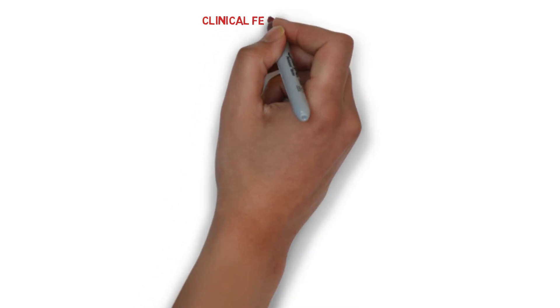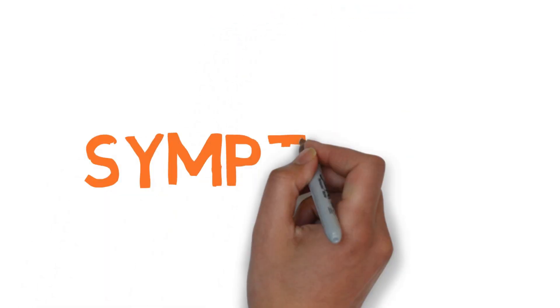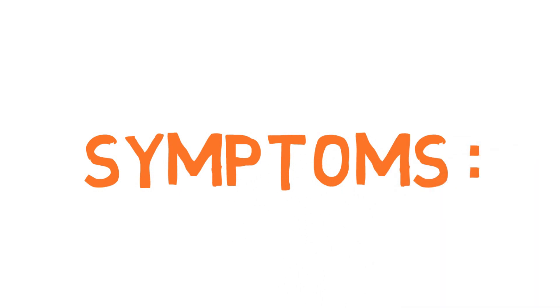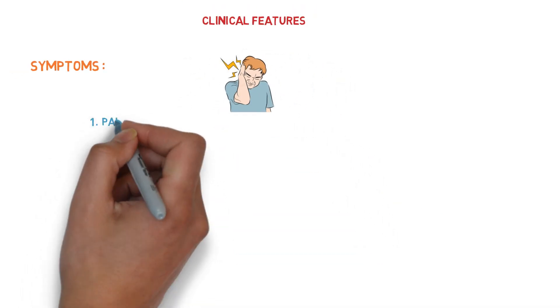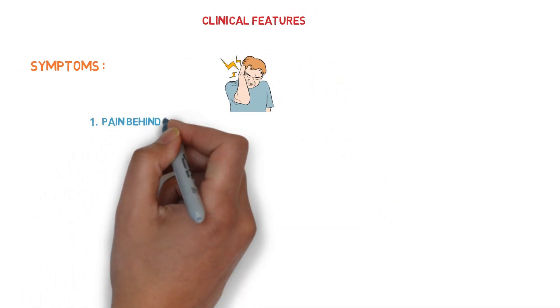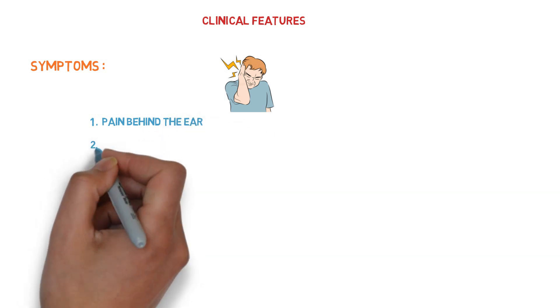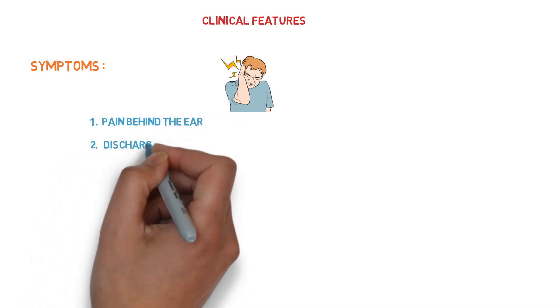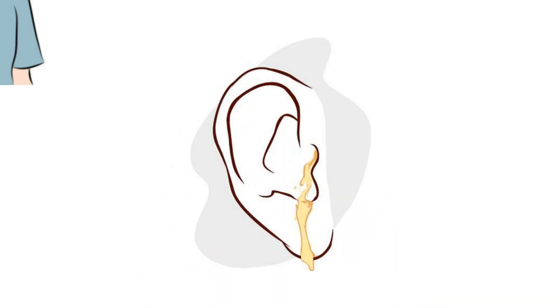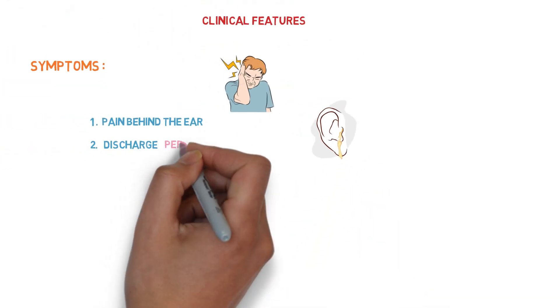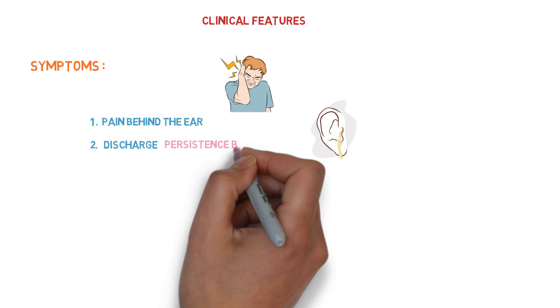So what are the clinical features? The symptoms are similar to those of acute suppurative otitis media. There is pain behind the ear because of accumulation of pus, and ear discharge. Any persistent ear discharge beyond three weeks in a case of acute otitis media directly points toward mastoiditis.